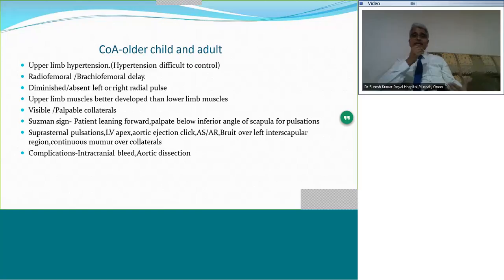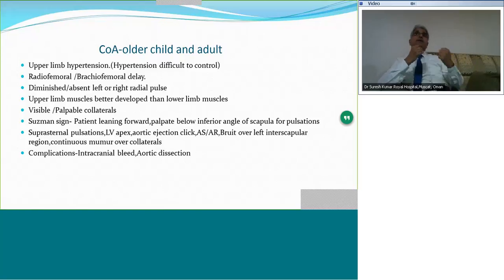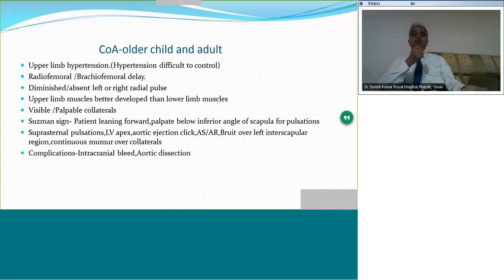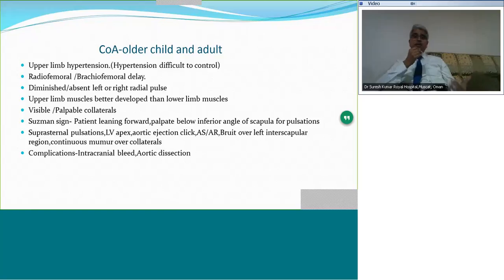An interesting finding in older children and adults is that they look very muscular in the upper part of the body — the torso and arms look quite muscular — but in the lower limbs they look very weak. Collaterals may be visible or palpable. The Sushman sign involves eliciting collaterals below the angle of the scapula — you make the patient lean forward, ask them to touch their toes, and palpate below the scapula on both sides. Other findings include suprasternal pulsations due to dilated ascending aorta, aortic ejection click, signs of aortic stenosis or regurgitation, bruit over the left inter-scapular region, and continuous murmur over collaterals.